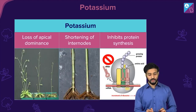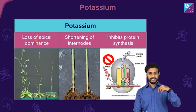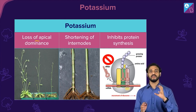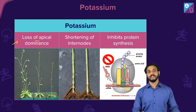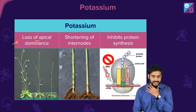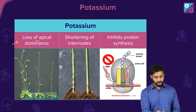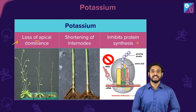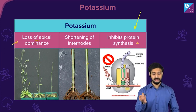Potassium deficiency is very important. It causes loss of apical dominance — the apex does not grow properly. There is also shortening of internodes, and protein synthesis is inhibited. Apical dominance will be studied more when we cover plant hormones, but briefly it means the apex tries to grow more and that ability is lost.